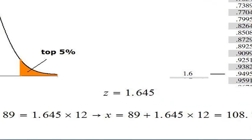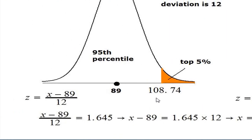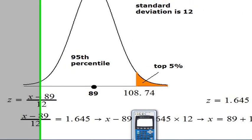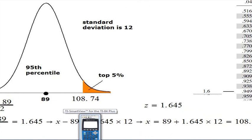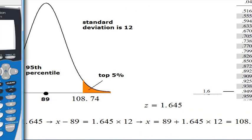And the answer would be what? 108.74 or higher will come in the top 5%.